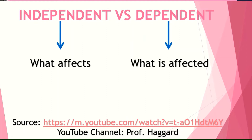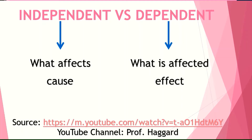We are going to have two variables: one is the independent variable, and another is the dependent variable. In the example given, what affects the low or high score? Isn't it that the score is what is affected, and what affects it is the time you spent reviewing? In other words, the independent variable is called the cause, and the dependent variable is called the effect — according to the YouTube channel Professor Haggard.